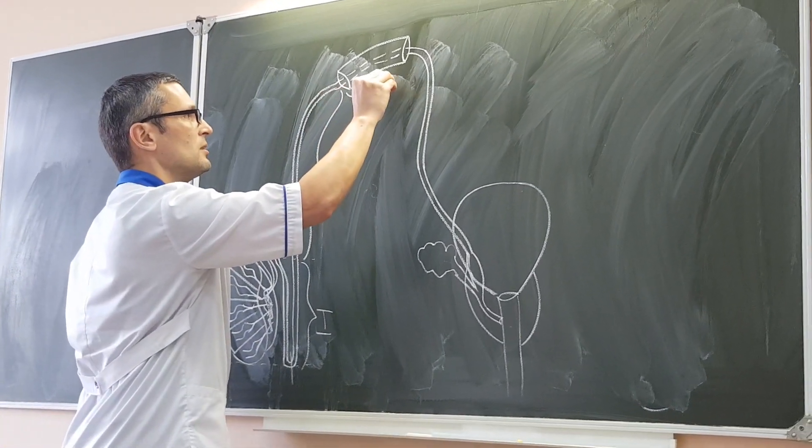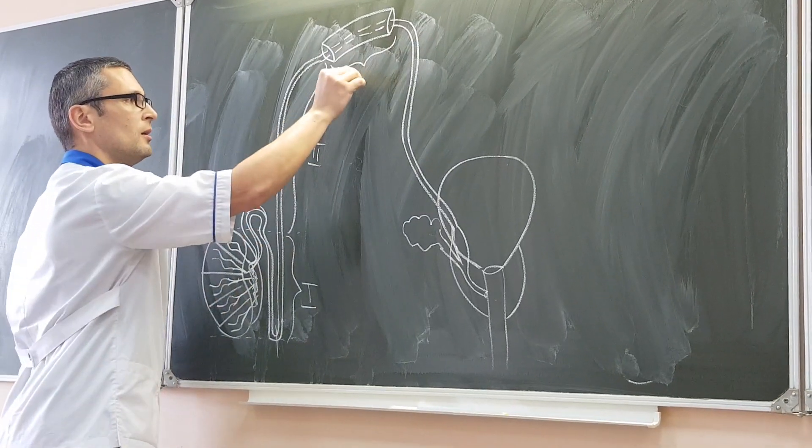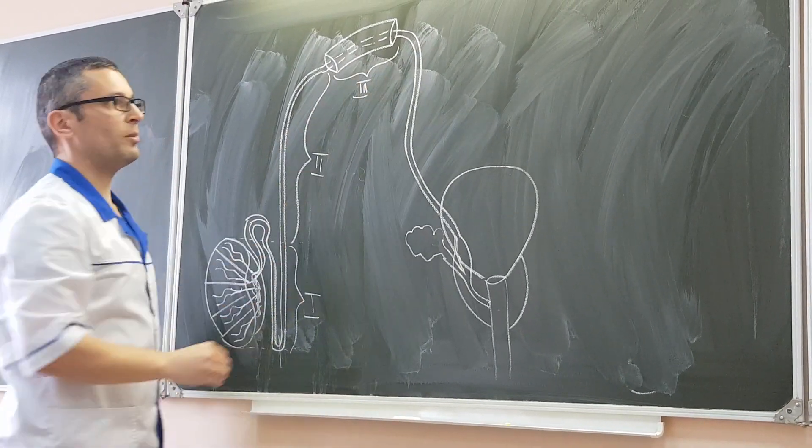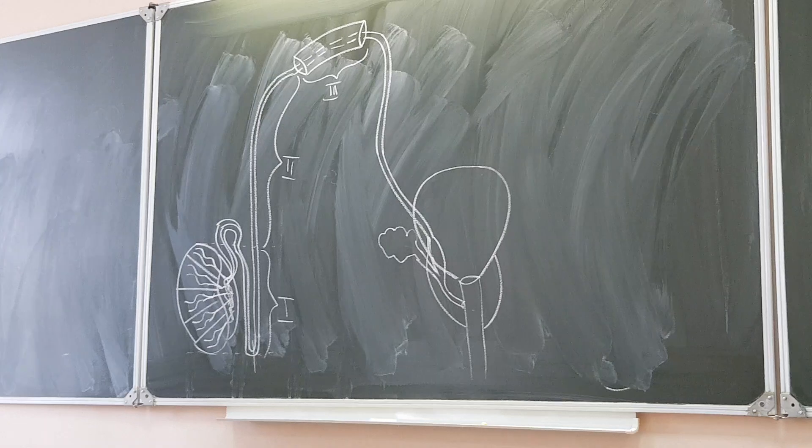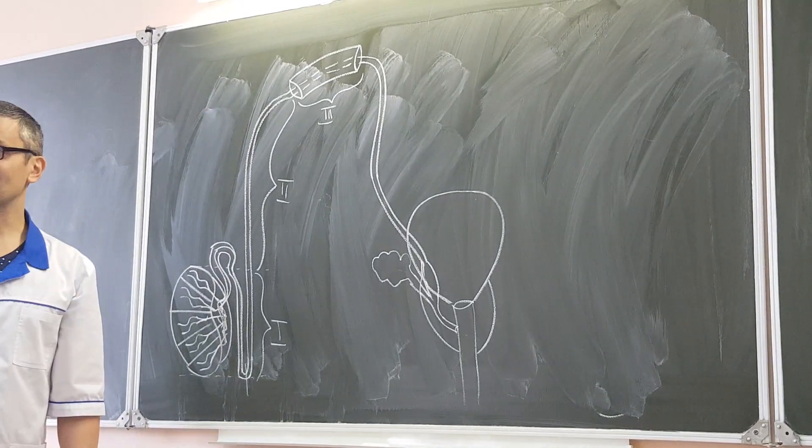Next part. Logically, it passes in the inguinal canal, the shortest part, third one. And it is called pars inguinalis, because in inguinal canal. In inguinal canal.